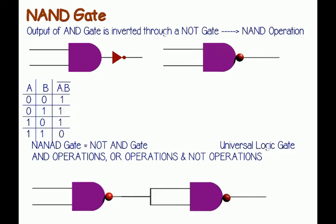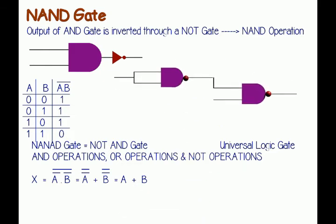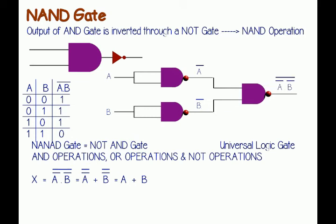Now we will try to realize an OR gate from a NAND gate. From De Morgan's theorem, we know that x equals the whole bar of A-bar dot B-bar, which equals A-double-bar plus B-double-bar, and this is nothing but A plus B — a logical OR operation. This equation can be represented by gates where inputs are first inverted, then passed through a third NAND gate. Input A is inverted through a NAND gate to become A-bar, input B is inverted to become B-bar, and the output of the third NAND gate is the whole bar of A-bar dot B-bar, which equals A plus B according to De Morgan's theorem.